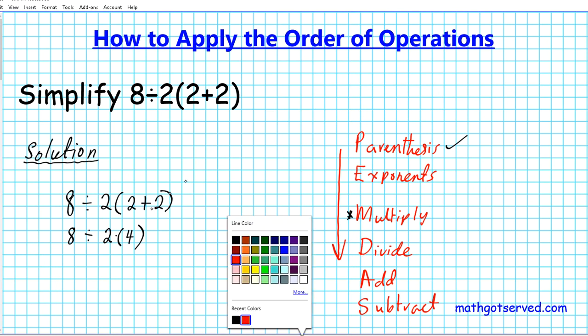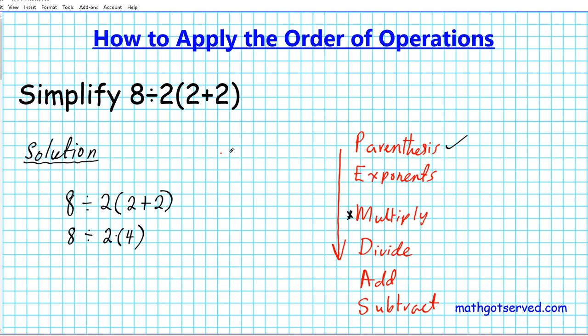So the wrong way of doing this is as follows. Most students will say, oh, you know what? I'm going to go ahead and do this. Let's do this on the side. 8 divided by 2 times 4 which gives you 8 and then 8 divided by 8 is 1. And that's your answer.